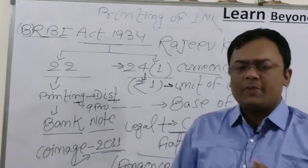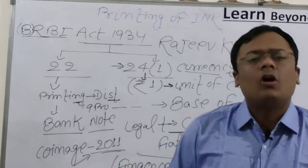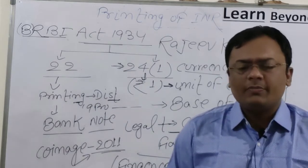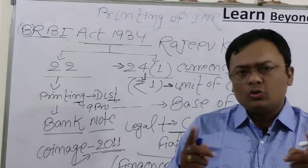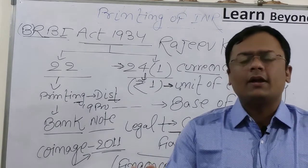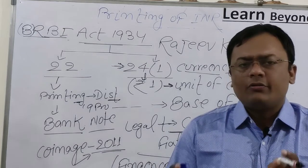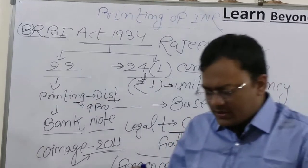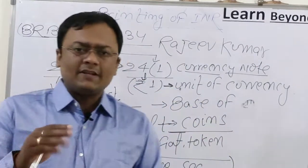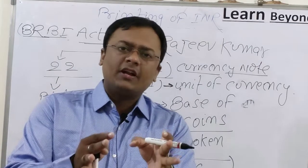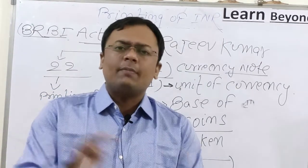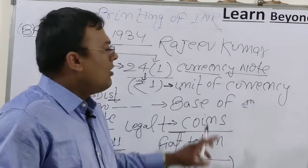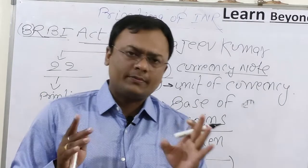To summarize so far: we discussed printing of currency, RBI Act 1934 with two sections — Section 22 (RBI handles printing to distribution), Section 24A (RBI cannot print the one rupee note). The one rupee note is base of currency, currency note, unit of currency, fiat money, legal tender, and token money. The Finance Secretary — currently Rajeev Kumar — signs the one rupee note, not the RBI Governor.